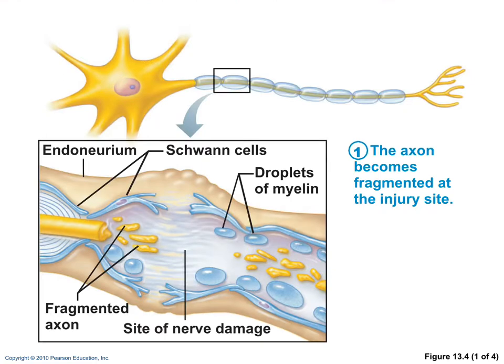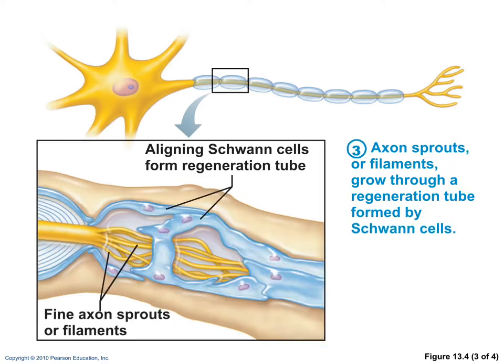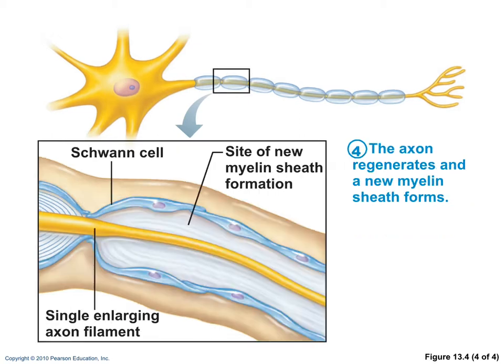To quickly review the stages of nerve regeneration: first, the axon becomes fragmented; then macrophages clean out the dead debris; then Schwann cells produce the regeneration tube; and finally, the axon regenerates along with a new myelin sheath.